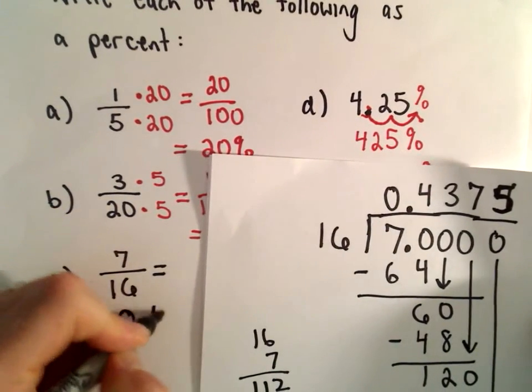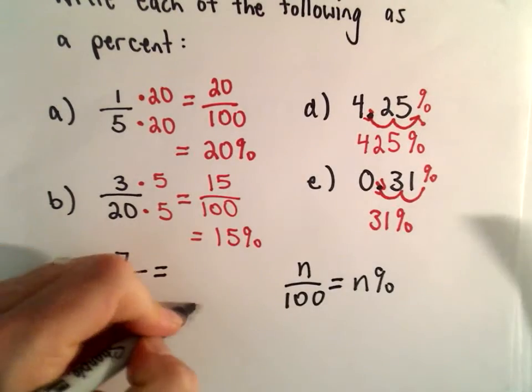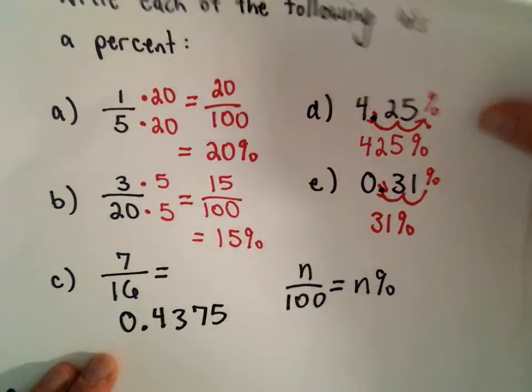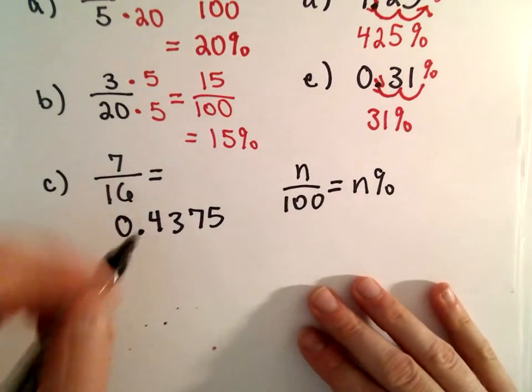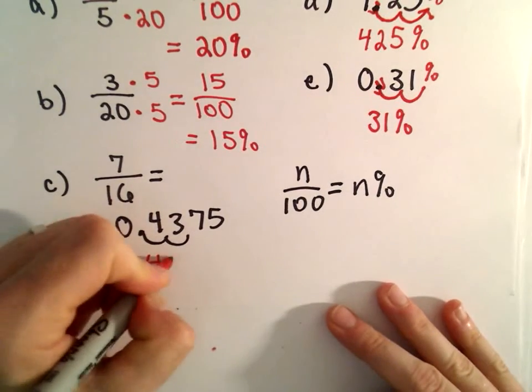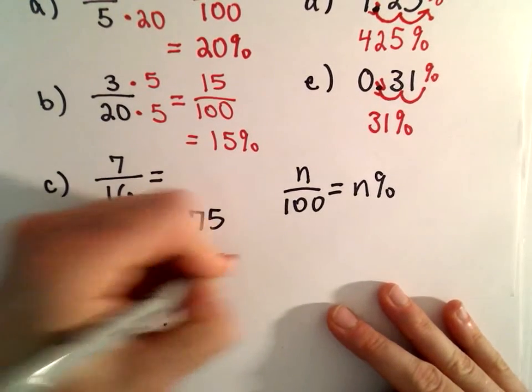And now we can do the exact same thing, we can do the exact same thing, let's move it twice, and that'll give us 43.75%.